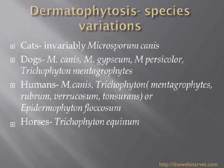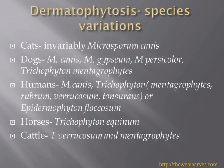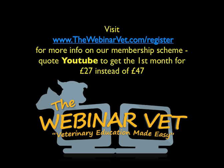Briefly, because I don't have huge amounts of experience in this area: horses tend to get Trichophyton species, cattle get Trichophyton verrucosum and Trichophyton mentagrophytes, and sheep also get Trichophyton verrucosum.